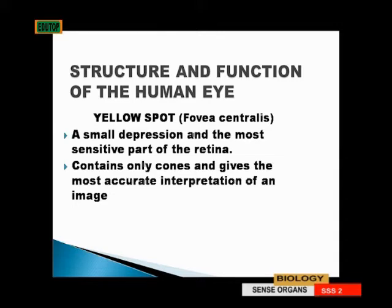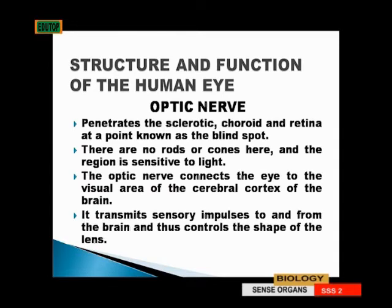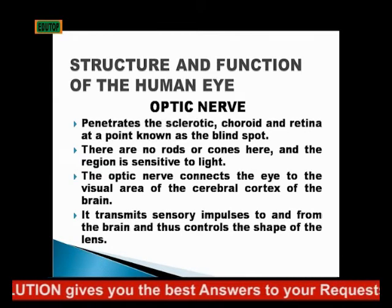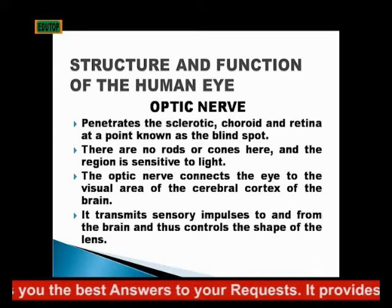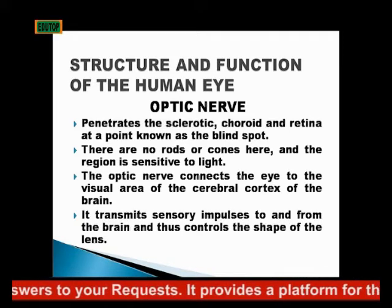Since cones are concerned with vision in bright light, the yellow spot contains only cones and gives the most accurate interpretation of an image. The optic nerve penetrates the sclera, the choroid, and the retina at a point known as the blind spot. There are no rods or cones at the blind spot, so that region is not sensitive to light. The optic nerve connects the eye to the visual area of the cerebral cortex of the brain, transmitting sensory impulses to and from the brain, and it also controls the shape of the lens.